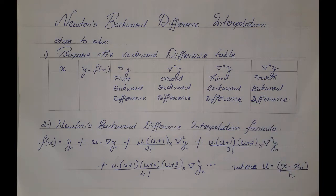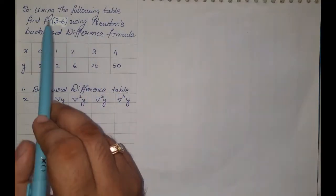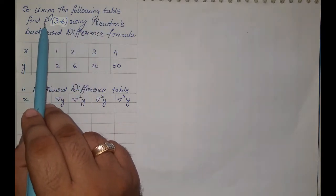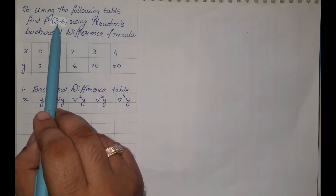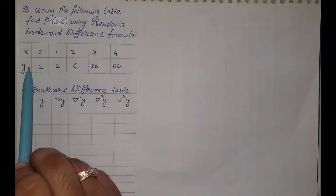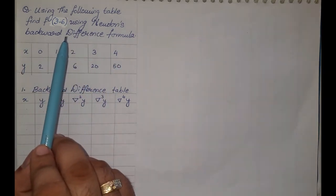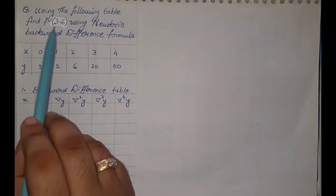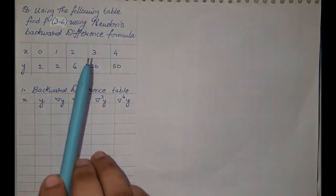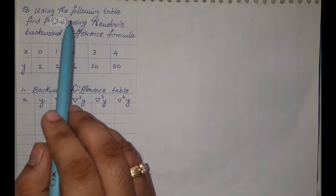Now let us take up one example to find the solution using Newton's backward difference interpolation formula. The question asks: using the following table, find the value of f when x is 3.6 using Newton's backward difference formula. Since 3.6 falls between the range of 0 to 4, this is a sum based on interpolation.